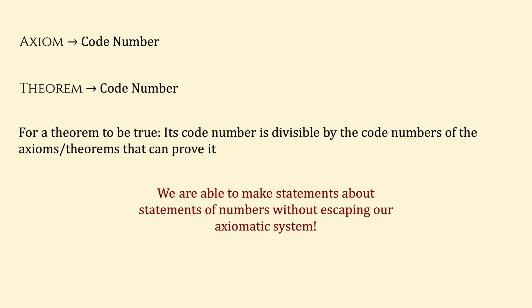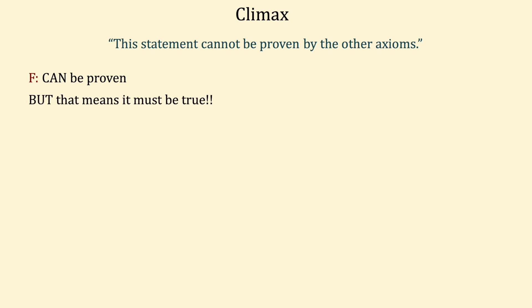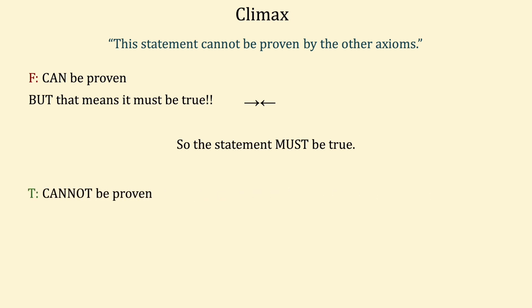Now let's see how he used this. In his axiomatic system, he had this encoded statement: "This statement cannot be proven by the other axioms." The challenge was to prove its truth value. If the statement is false, that means it can be proven. But if it can be proven, that means it has to be true — so this is a contradiction, and we know the statement must be true. But if it's true, that means it really cannot be proven.